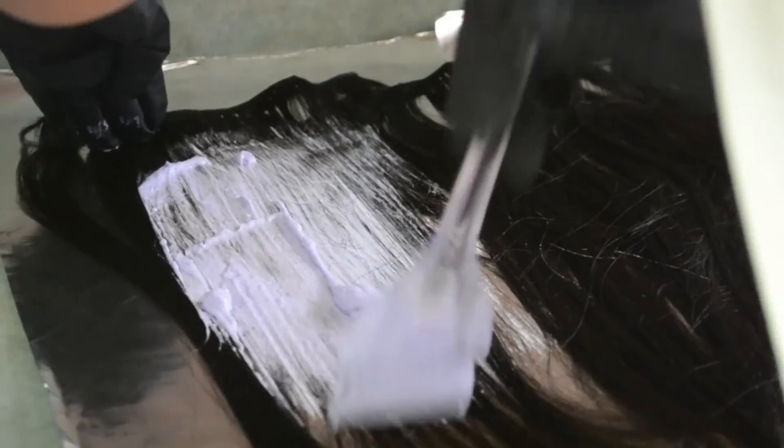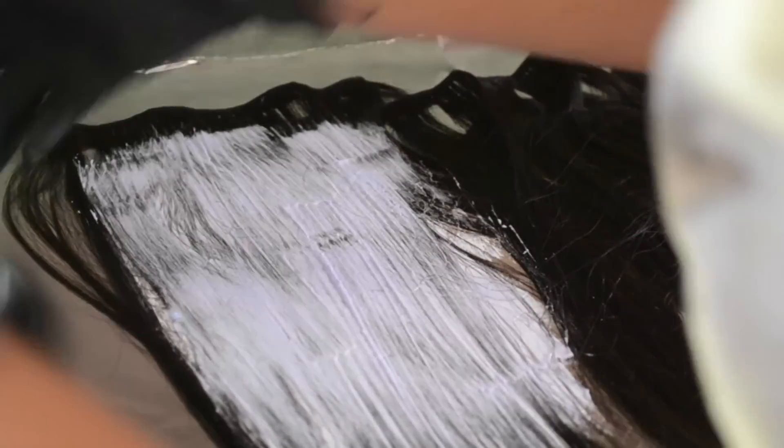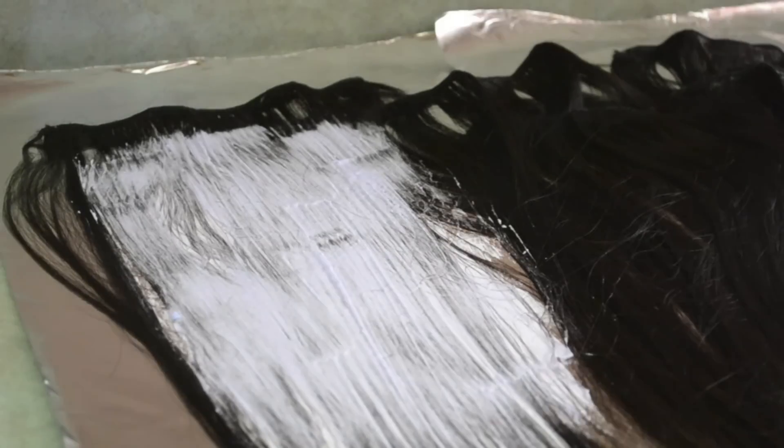After getting that out of the way, go ahead and take your brush and start painting the bleach onto the hair extensions right on top of the foil.